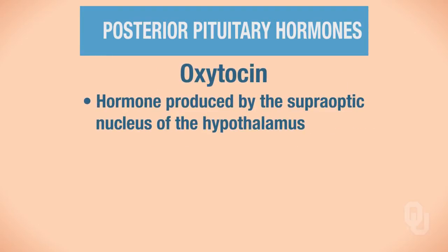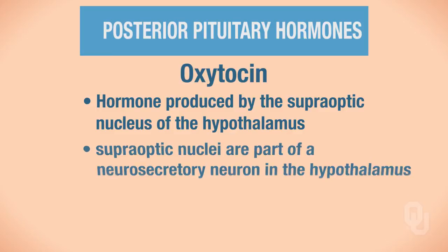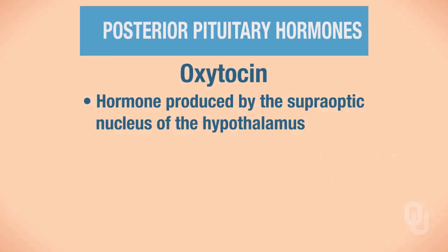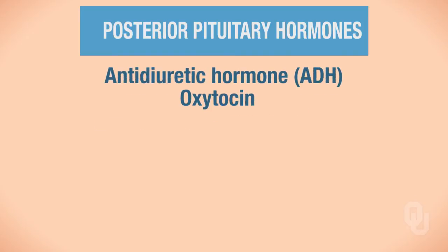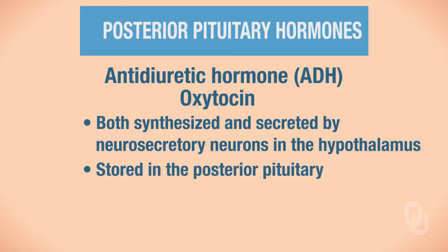Oxytocin is a hormone produced primarily by the supra-optic nucleus of the hypothalamus. It's important to note that the supra-optic nuclei are part of a neurosecretory neuron located in the hypothalamus. So both antidiuretic hormone and oxytocin are synthesized and secreted by neurosecretory neurons in the hypothalamus, and they are stored in the posterior pituitary.